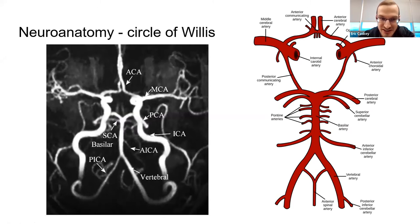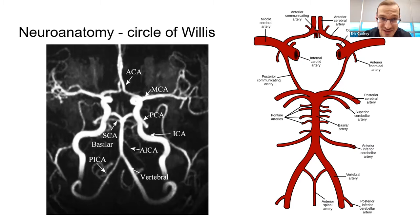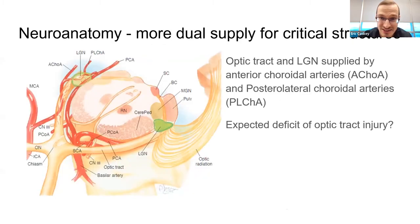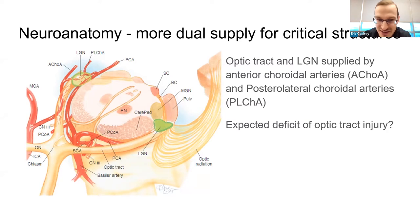The posterior circulation with the circle of Willis goes back to anatomy from Step 1 and Step 2, but it does have clinical importance. There is some nice dual supply, and the optic tract is one of those structures. Remember the anterior choroidal and posterolateral choroidal arteries for the specific visual field deficits that injuries from those would result in.